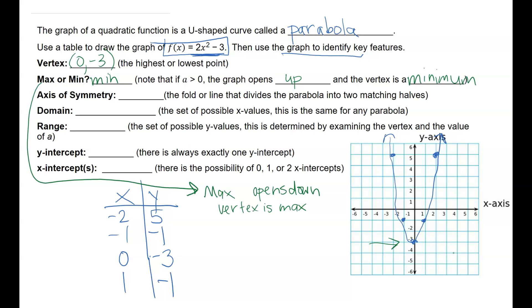The axis of symmetry is the fold or the line that divides the parabola into two matching halves. That is where I would put my mirror to see the two mirror images. So the axis of symmetry in this case is where the value of x is equal to 0. So the axis of symmetry is where x equals 0. We will have cases coming up where the axis of symmetry will be something other than the y-axis.